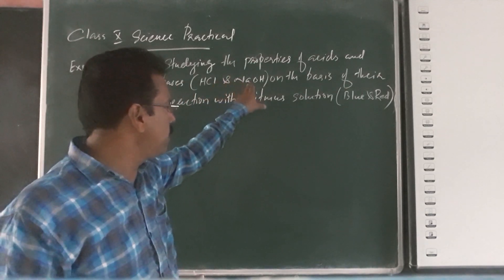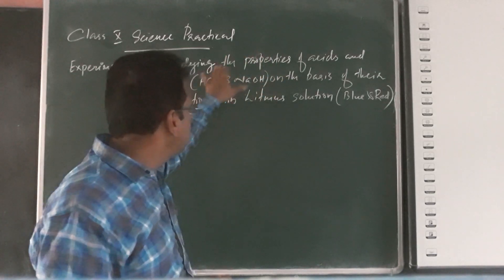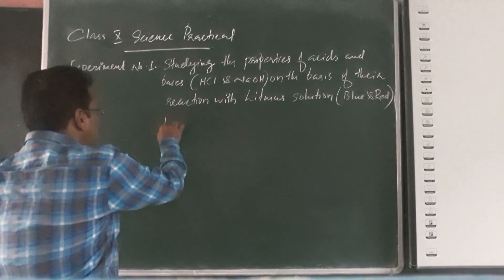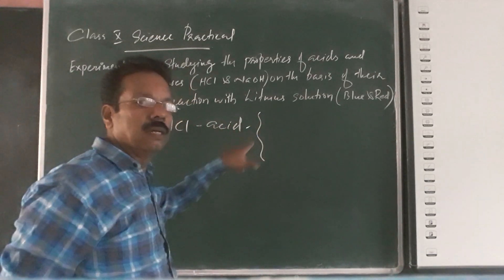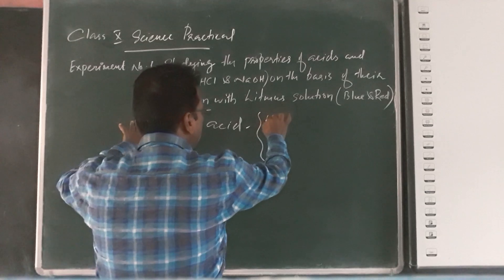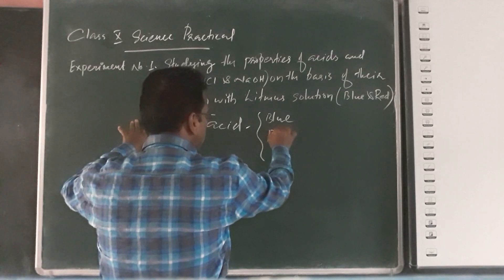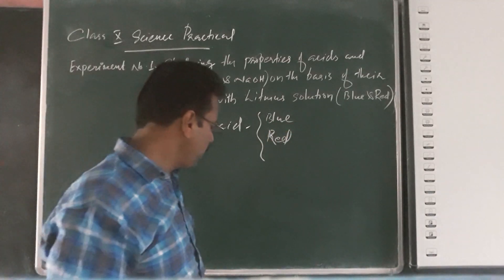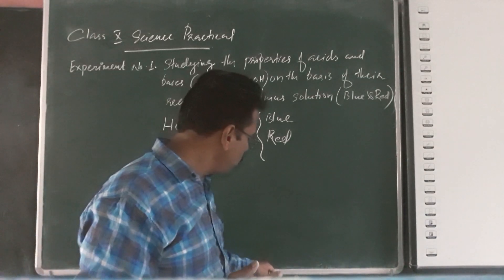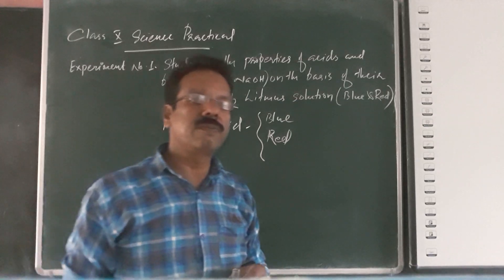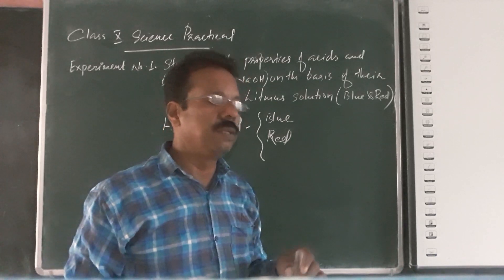The first experiment is the reaction of blue litmus and red litmus with hydrochloric acid and sodium hydroxide. Hydrochloric acid, HCl, is an acid. We can check the reaction of blue litmus and red litmus with the acid. First, we have to make an acidic solution — that is, a reaction of acid with the litmus.